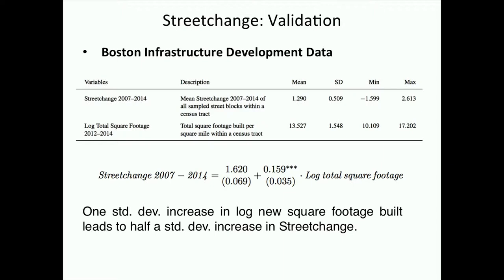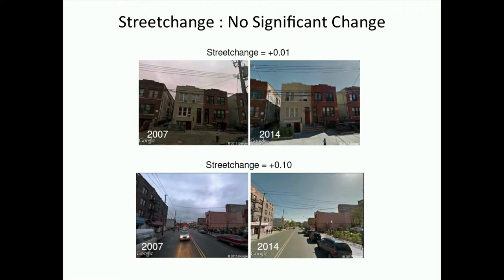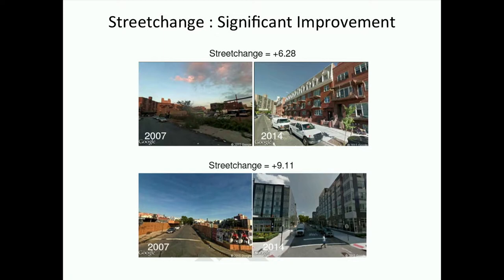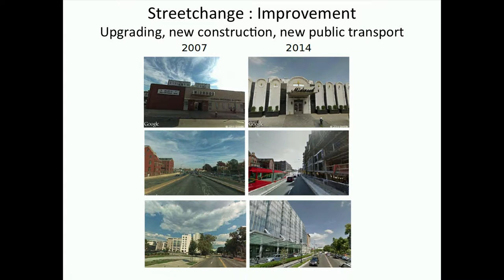Looking at how the algorithm output looks: for street blocks with no significant change, the algorithm correctly says there is no significant change, and it is invariant to things like changes in weather or seasonal changes. For significant positive improvement, the algorithm detects new construction, improvements in streets and sidewalks, upgraded building facades, new public transportation, and new construction — all reflected by high street-change scores.